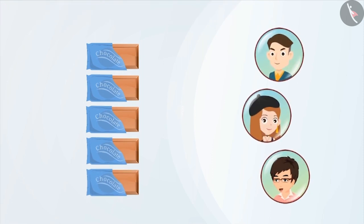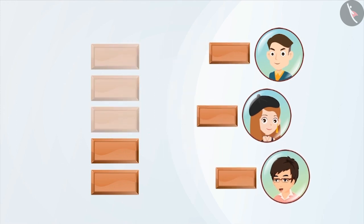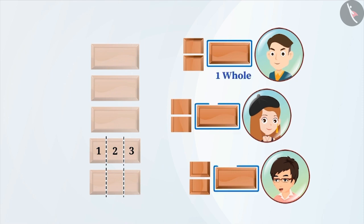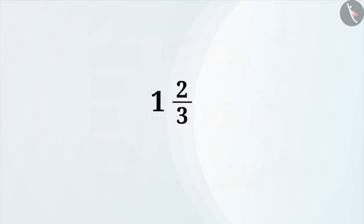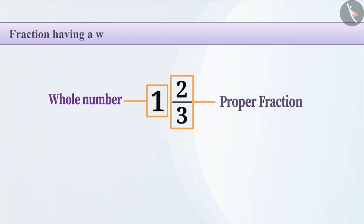There is another way to divide 5 chocolates among 3 people. First, we will give 1 whole chocolate to each person. The remaining 2 chocolates will be equally divided into 3 parts and 2 parts are given to each person. This way, each person has 1 whole chocolate and 2 parts out of 3. This can be expressed as 1 and 2 thirds. In this fraction, there is a whole number and a proper fraction. Fractions having a whole number and a proper fraction are called mixed fractions.